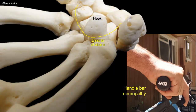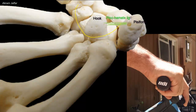Compression of the ulnar nerve may occur at the wrist between the pisiform and the hook of the hamate. The depression between the two bones is converted into a tunnel by a pisohamate ligament. The tunnel is called the ulnar canal or Guyon's tunnel. Ulnar canal syndrome is characterized by hypoesthesia in the medial one-and-a-half fingers and weakness of the intrinsic muscles of the hand.